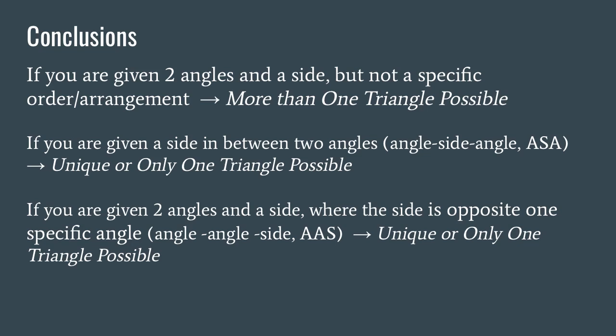So what can we conclude? If given two angles and a side but not a specific order, there is more than one possible triangle. If you're given a side in between two angles — Angle-Side-Angle or ASA — there's only one unique triangle. If you're given two angles and a side where the side is specified as opposite one specific angle — Angle-Angle-Side or AAS — that also results in one unique triangle.